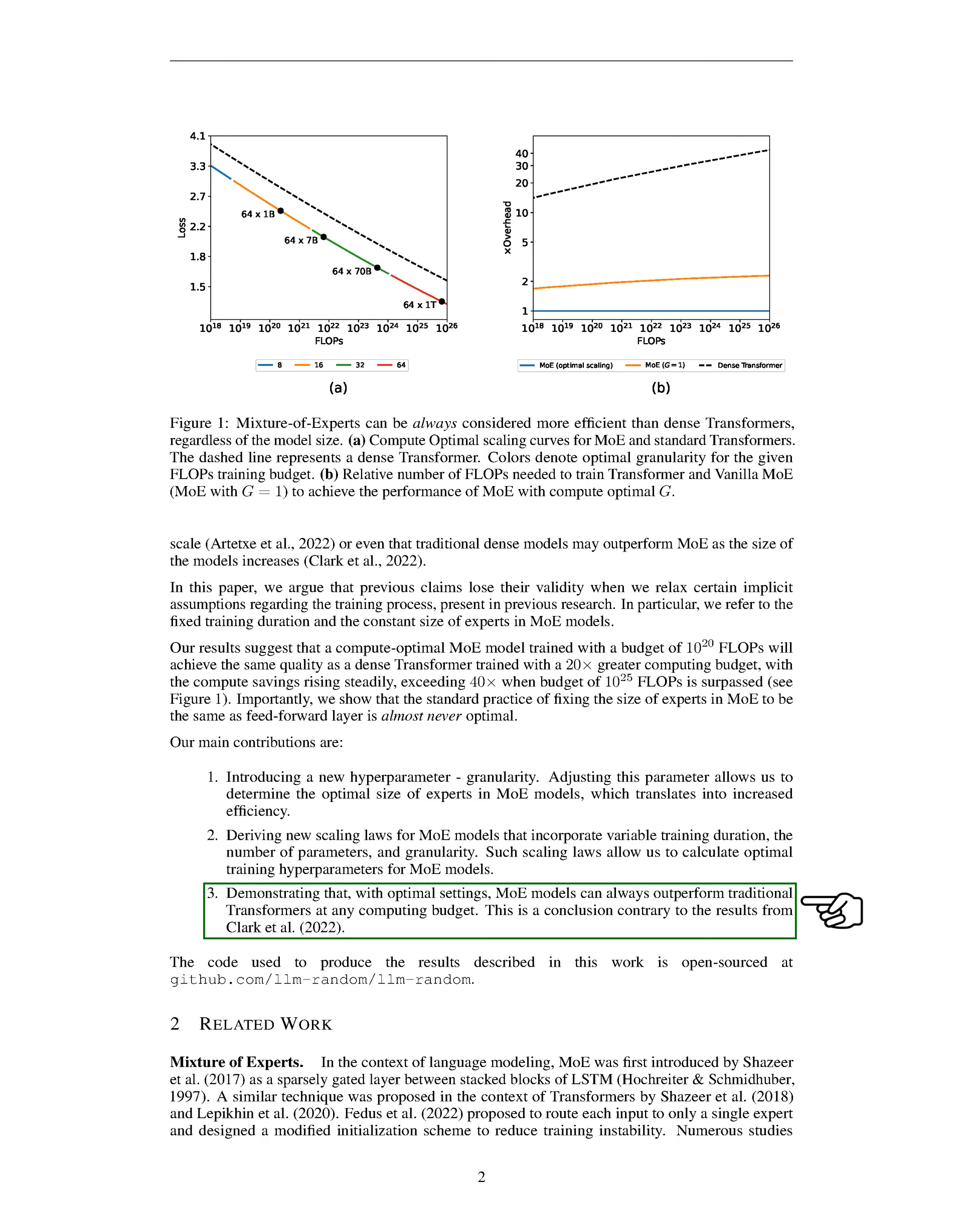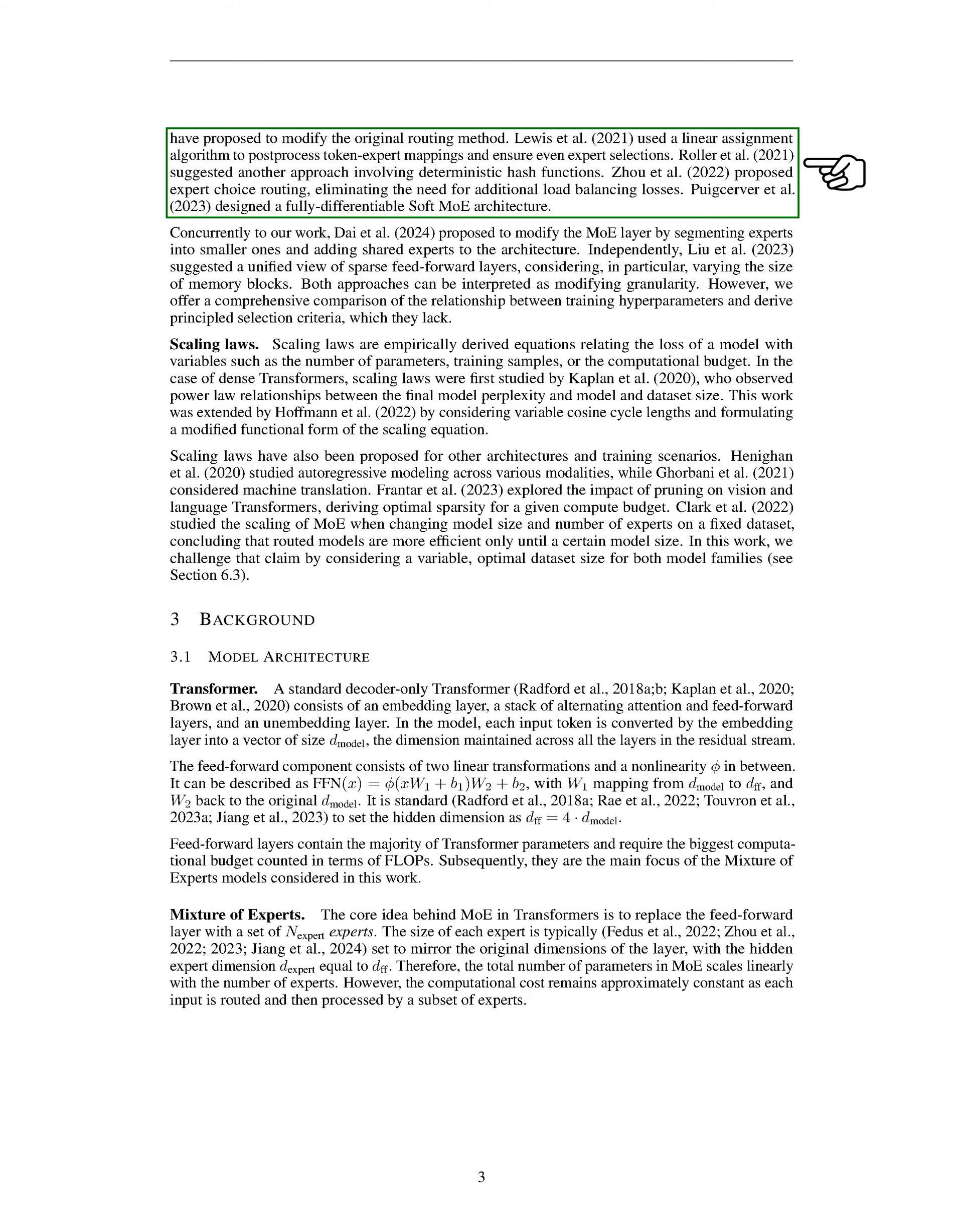Our results demonstrate that MoE models, when optimally configured, can outperform traditional transformers at any level of computational budget, contradicting previous findings. In the related work section, we delve into the history and development of MoE in language modeling, starting with its introduction as a sparsely gated layer in LSTM models and its adaptation to transformers. Various modifications to the original MoE concept have been proposed, including changes to the routing mechanism and the architecture of the MoE layer itself. Our work stands out by offering a detailed comparison of how training hyperparameters affect performance and by providing clear criteria for selecting these parameters.